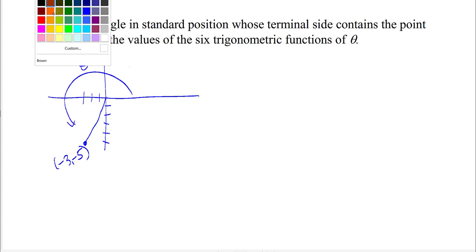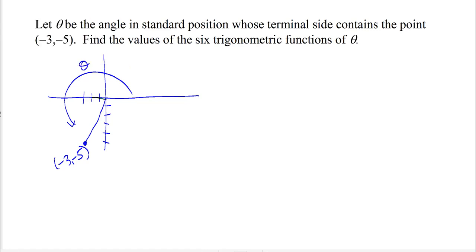We're going to make a triangle and label the sides. We're also going to include the negatives, which will take care of the correct signs on the trig functions. We went over -3 and down 5.